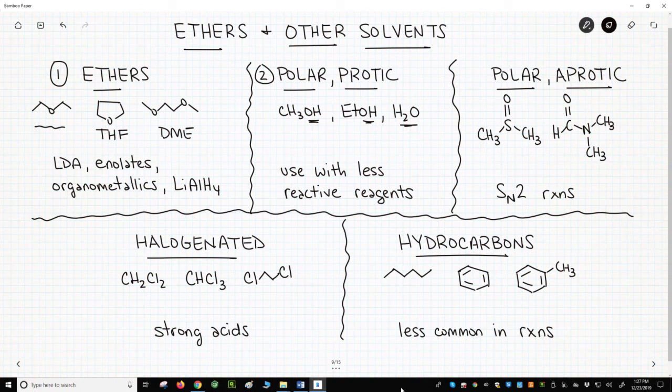The third category includes the polar aprotic solvents. That's dimethyl sulfoxide (DMSO) and dimethyl formamide (DMF), among others. These are widely used. We see them a lot in SN2 reactions. Their polarity helps to dissolve the nucleophilic salts found in SN2 reactions.